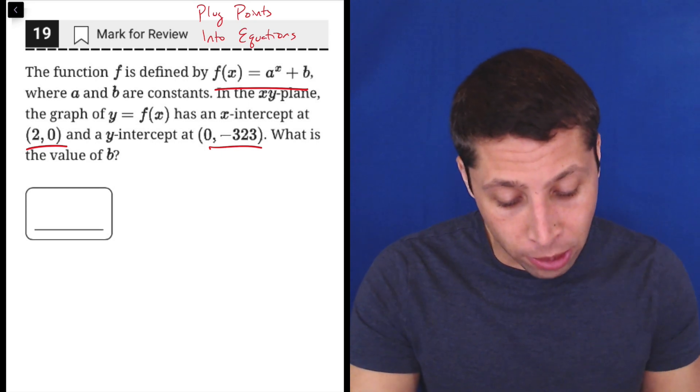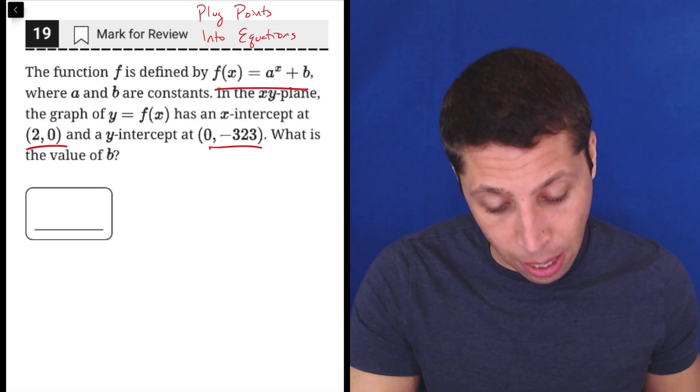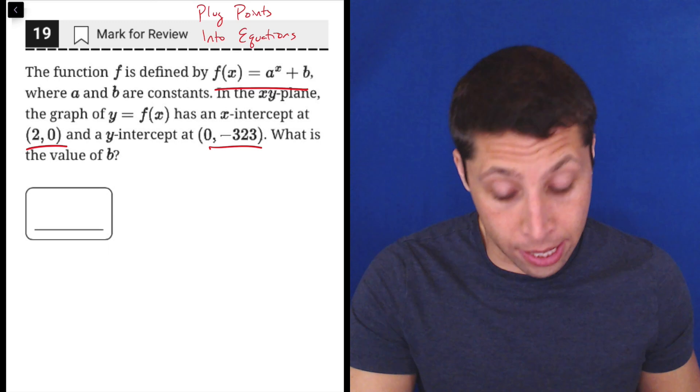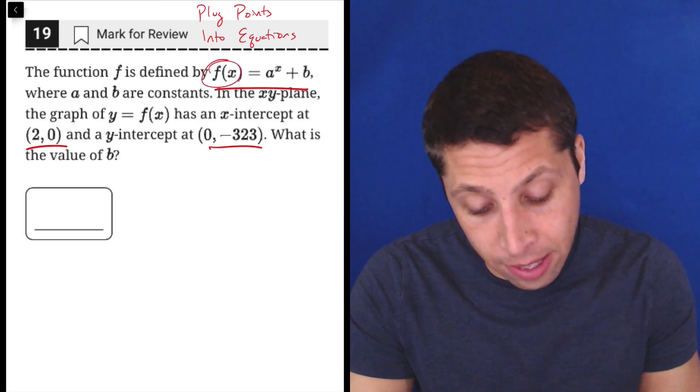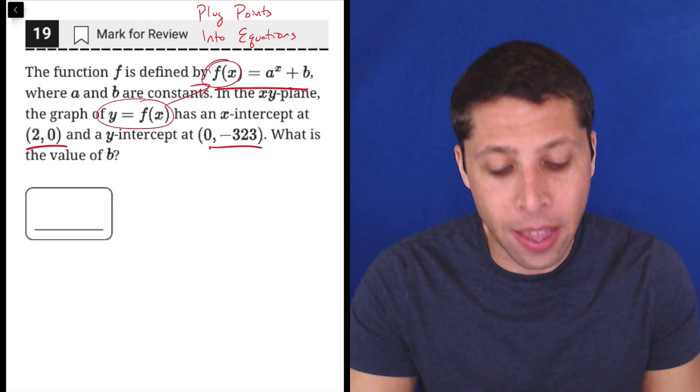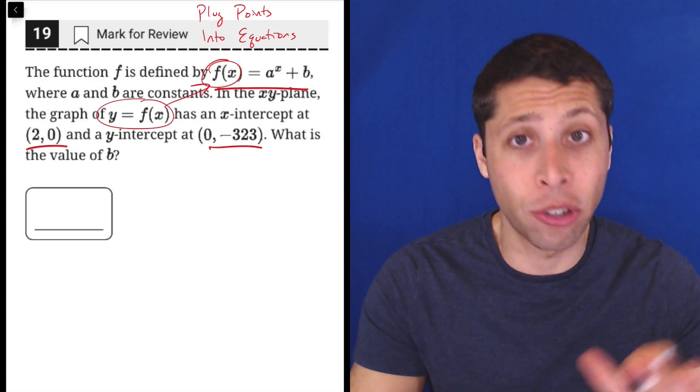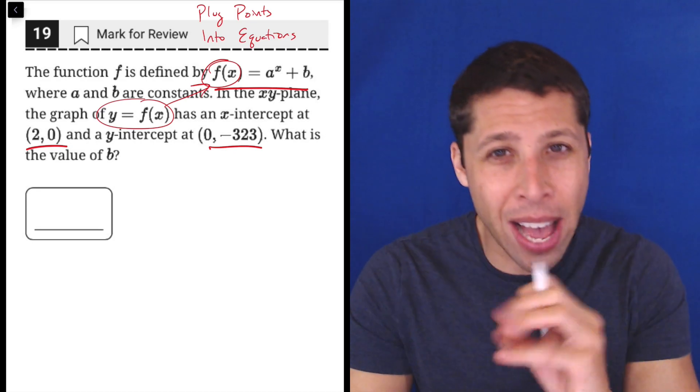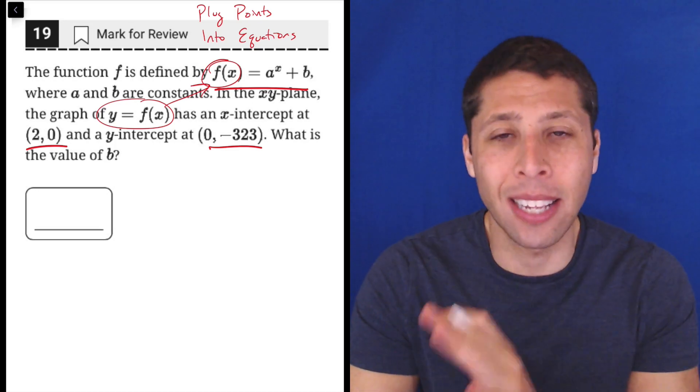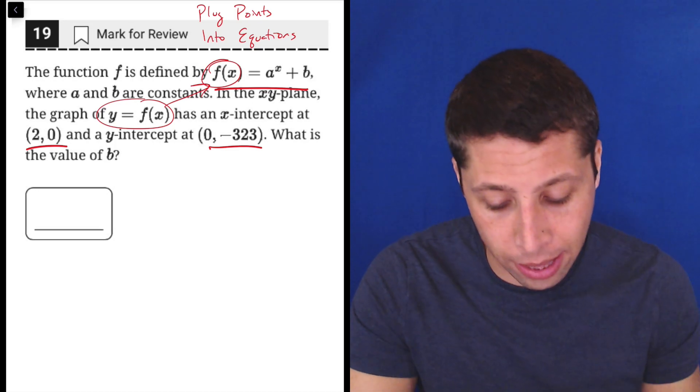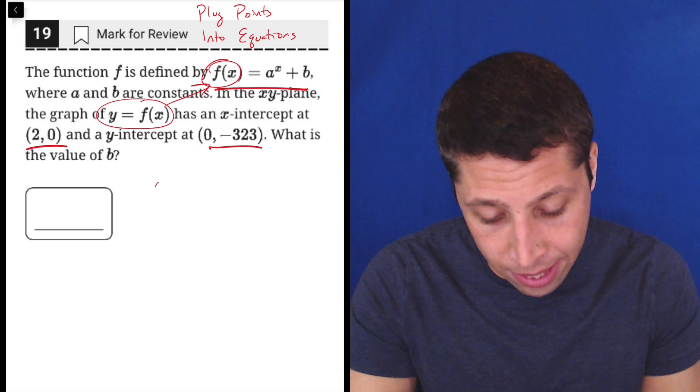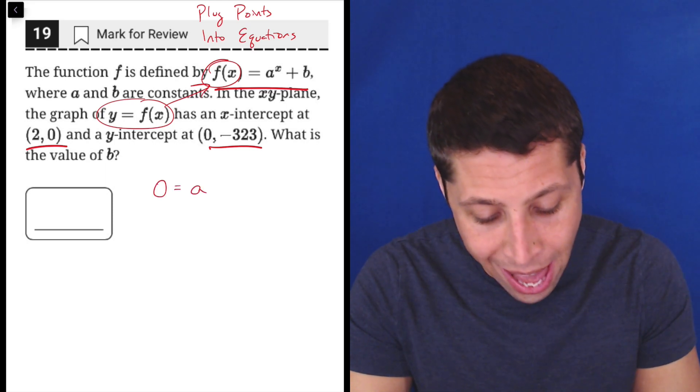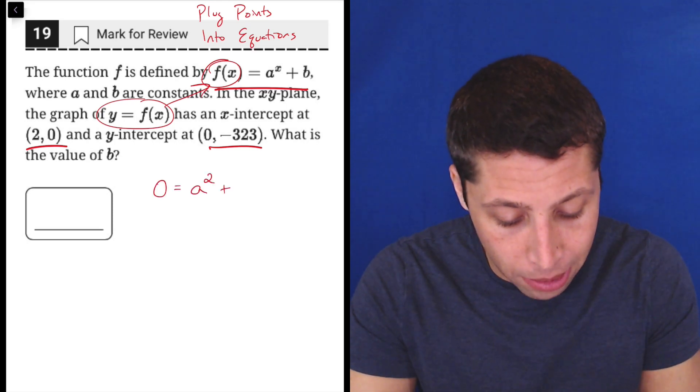So let's plug them in. If we take that first one, the x-intercept, x is 2 and y is 0. So the y, remember, is this part, right? They even just tell us here that that's how it behaves. But that's just function notation. You should get comfortable with that no matter what situation you've got. That kind of f of x, g of x, whatever that side is, that's basically behaving like a y. So we can plug in there. So the first thing I get then is that 0 is equal to a squared plus b.